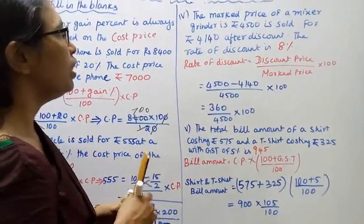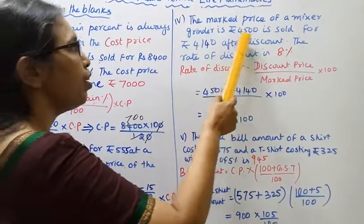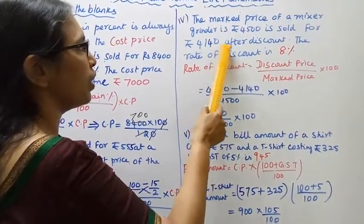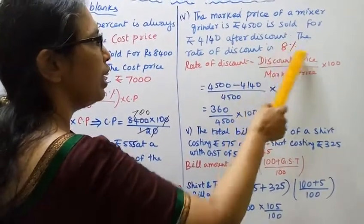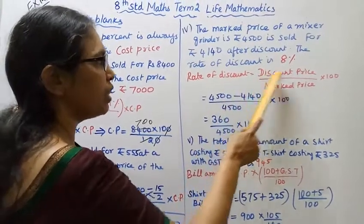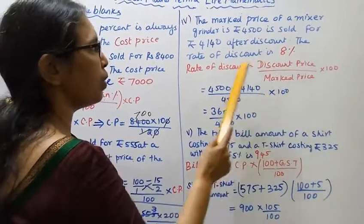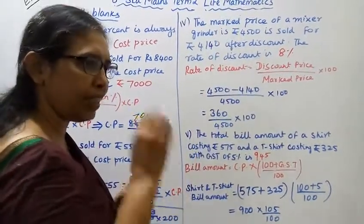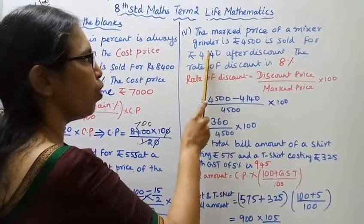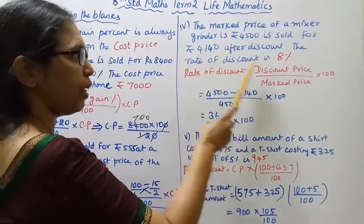Fourth: the marked price of a mixer grinder is rupees 4500, sold for rupees 4140 after discount. The rate of discount is 8%. Rate of discount equals discount price divided by marked price into 100. Discount price — this price is fixed. The grinder's selling price is 4140. Subtract to get the discount price: 4500 minus 4140.